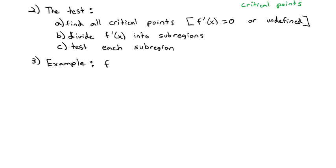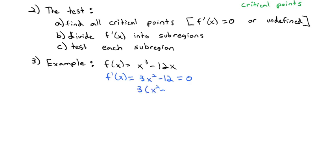Let's use that test with an example: f(x) = x³ − 12x. We want to find where the derivative is 0, where it's increasing, and where it's decreasing. The derivative is f'(x) = 3x² − 12. Setting it equal to 0 and factoring: 3(x² − 4) = 0, then 3(x + 2)(x − 2) = 0. So our critical points are x = −2 and x = 2.